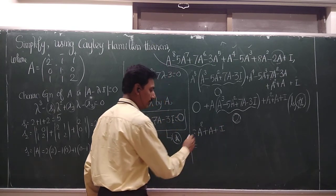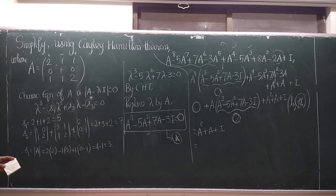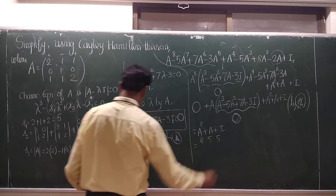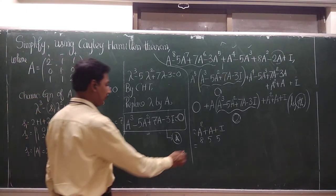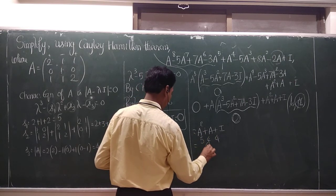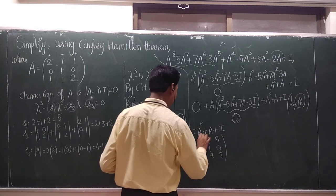Let us find out the A square value. What is the A square value? Now from this A, the A square value is... So A square value is 5, 4, 4, 0, 1, 0, then 4, 4, 5. This is the A square value.